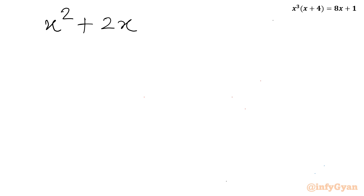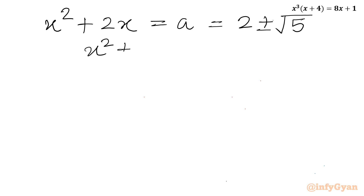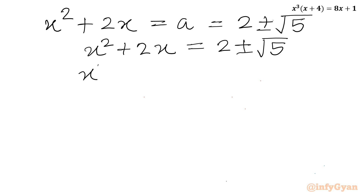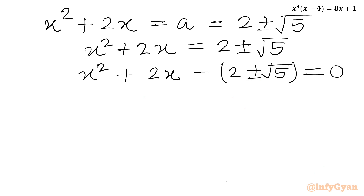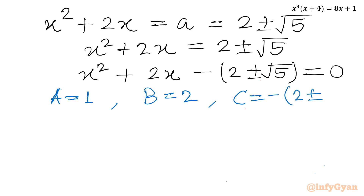Now A was our substitution x squared plus 2x. So I will write x squared plus 2x equal to A equal to 2 plus or minus square root 5. So x squared plus 2x equal to 2 plus or minus square root 5, or x squared plus 2x minus 2 plus or minus square root 5 equal to 0. This is one quadratic equation. Again in x, I will use the quadratic formula method. Capital A is 1, capital B is 2, and capital C is minus times 2 plus or minus square root 5.